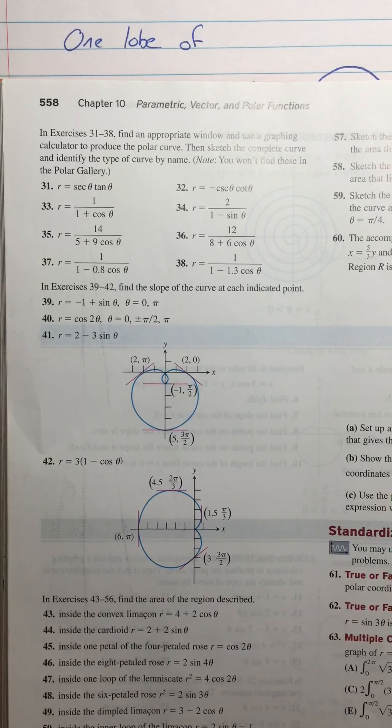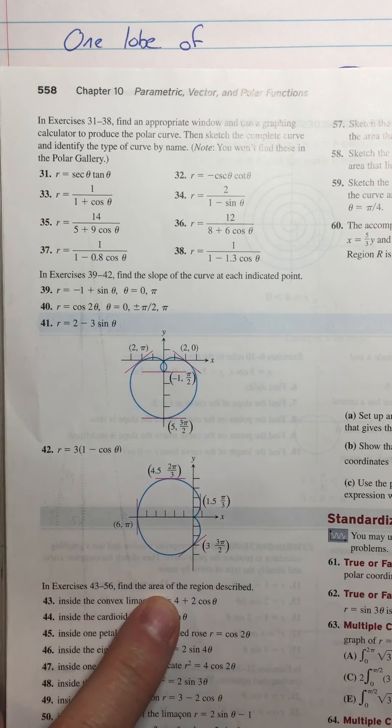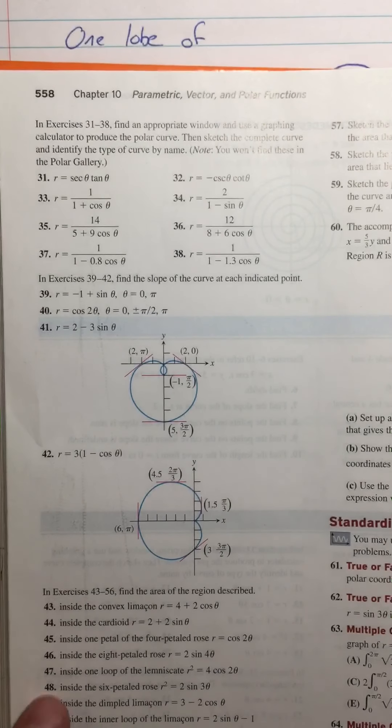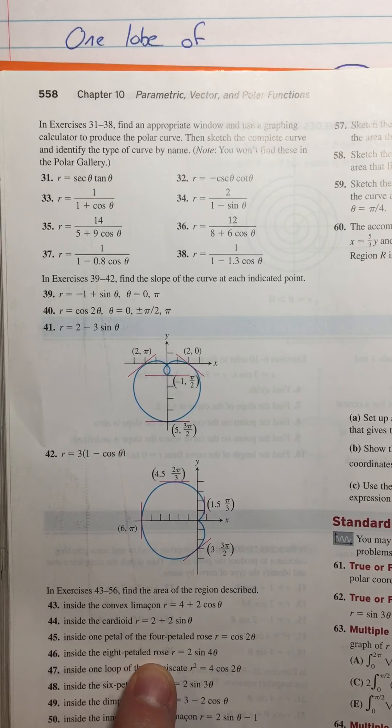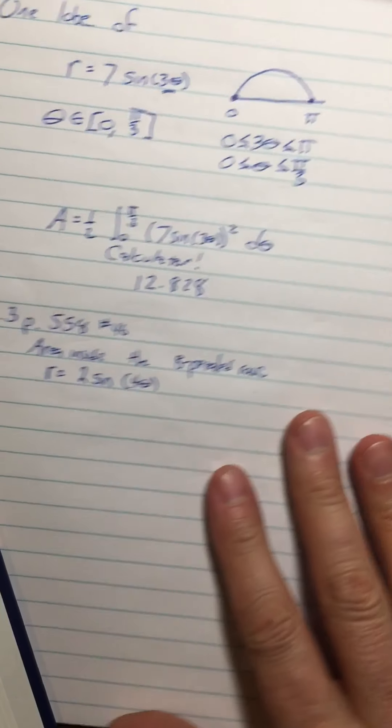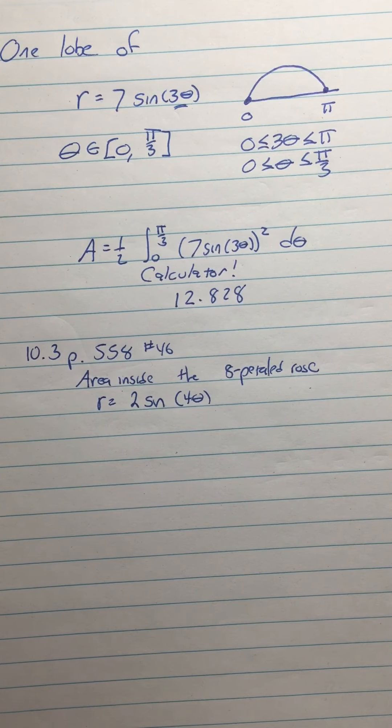So at this point we can just jump into the book problems. We're on page 558, still in the area section. We're going to do number 46: inside the eight-pedaled rose r equals 2 sine of 4 theta, and here it is written correctly.